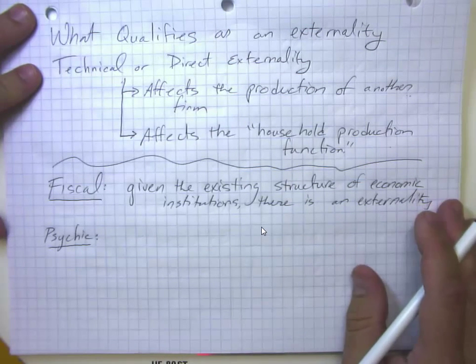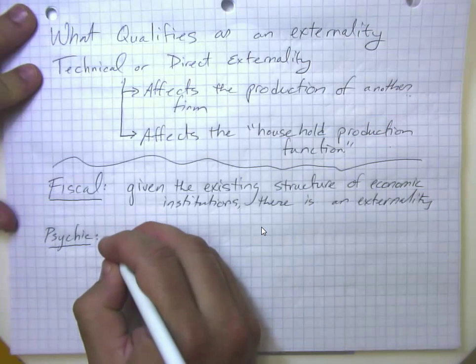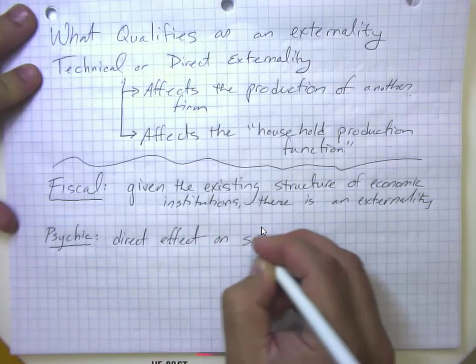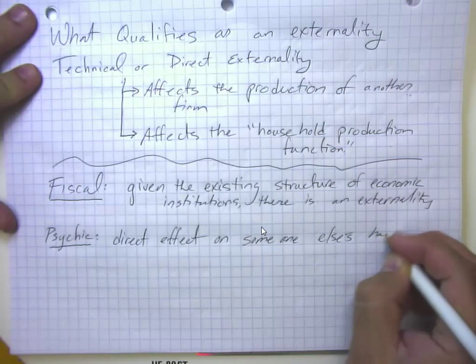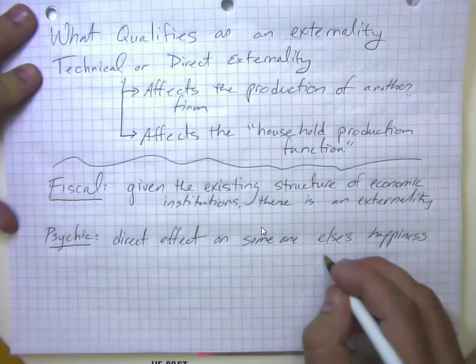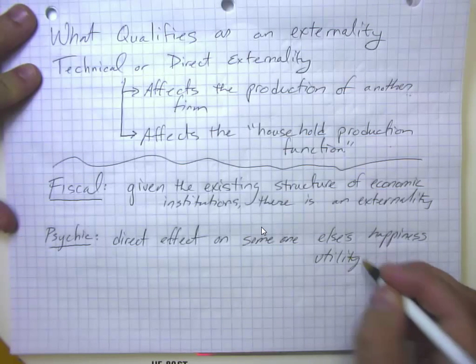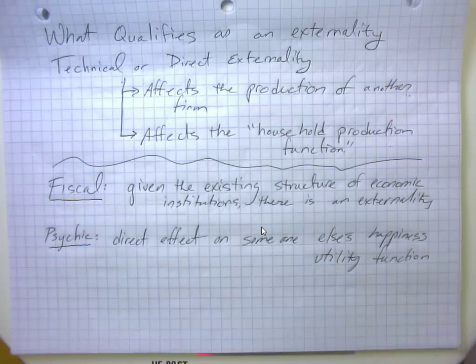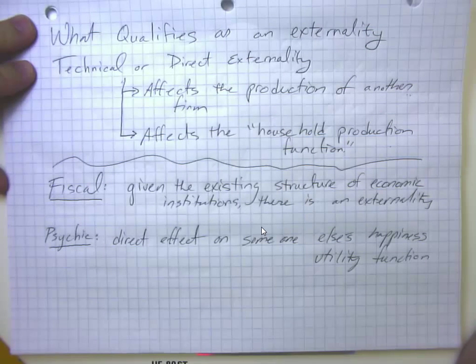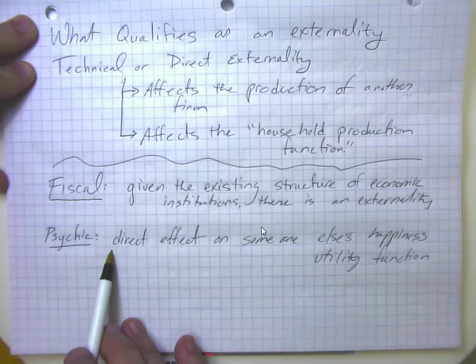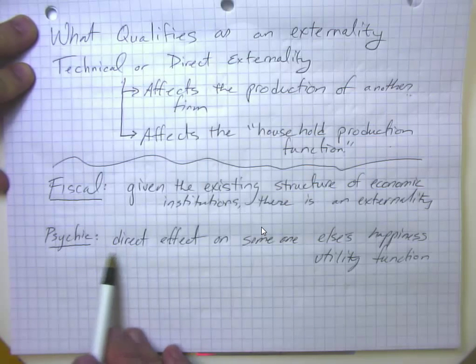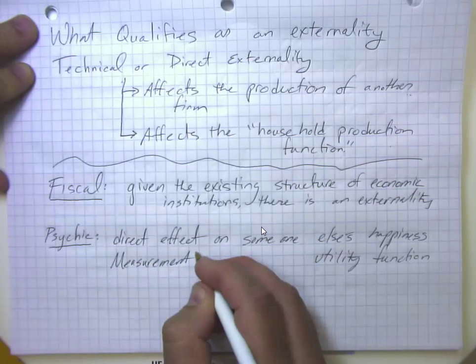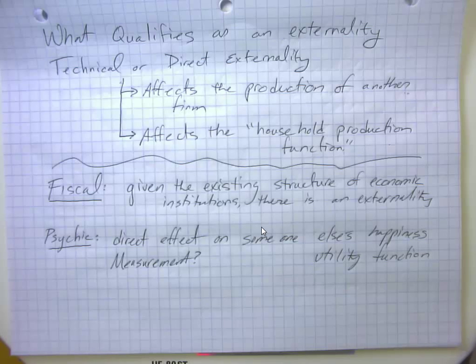A psychic externality is a situation where there is a direct effect on someone else's happiness, or as an economist would say a direct effect on someone else's utility function. So the idea here would be when you dress in a certain way or consume a particular product, it just makes me either happy or unhappy. And the tricky thing here is that may very well be something that actually happens, but obviously there's a measurement problem here. So that's one issue. How do we actually measure how much your dressing in a particular way either increases or decreases my happiness?